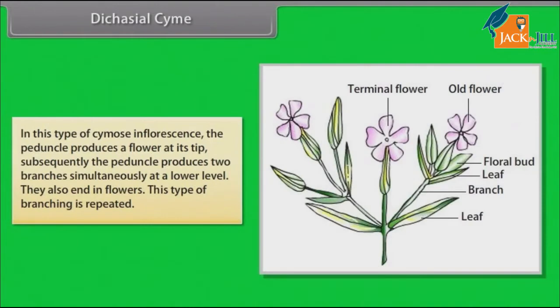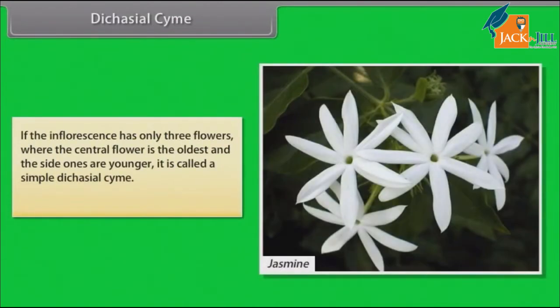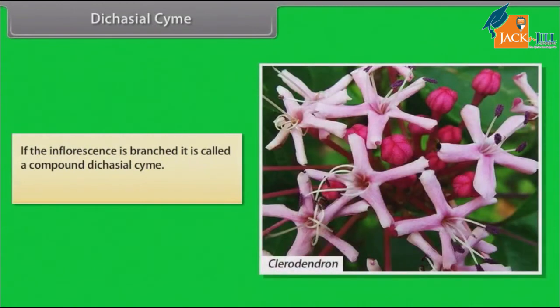In dichasial cyme, the peduncle produces a flower at its tip. Subsequently, the peduncle produces two branches simultaneously at a lower level. They also end in flowers, and this type of branching is repeated. If the inflorescence has only three flowers, where the central flower is the oldest and the side ones are younger, it is called a simple dichasial cyme. Example: jasmine. If the inflorescence is branched, it is called a compound dichasial cyme. Example: Clerodendron, Ranunculus.